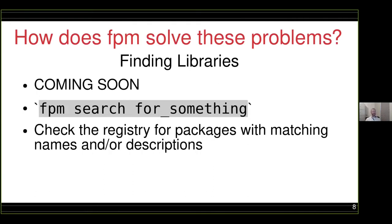What about finding other libraries? This is functionality that hasn't quite been implemented yet — we're still in a prototype phase. But the basic idea is you would be able to, from the command line, just run `fpm search` for something, and FPM would check its own registry for packages with matching names or descriptions and report those to you, so you can figure out what libraries are out there to help you solve the problem you're looking for.